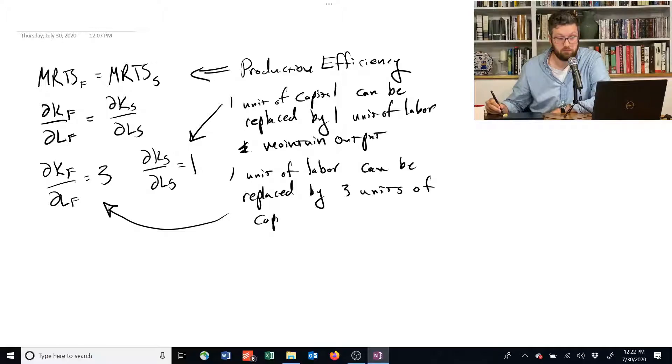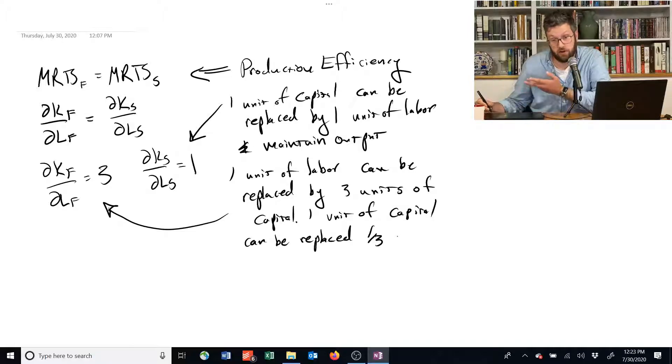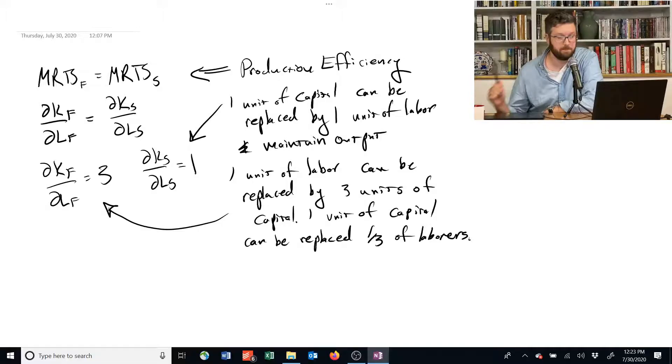Or we could equivalently say 1 unit of capital can be replaced by 1/3 laborers, or just 1/3 of an hour of their time. People don't come in thirds, but their time does. And again, maintain output. So the idea here is that there's this possibility of productive exchange.